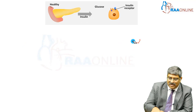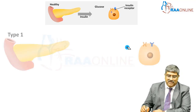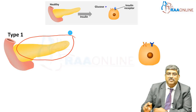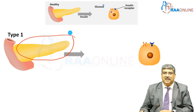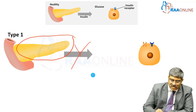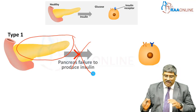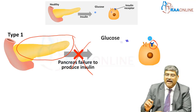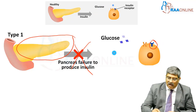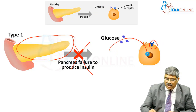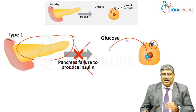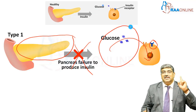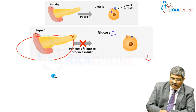Let us see what happens with type 1 diabetes mellitus. In type 1, the pancreas which was supposed to secrete the insulin does not produce the insulin. So there will not be any action on the insulin receptor and the glucose cannot be transported into the cell for utilization. Therefore, hyperglycemia occurs. This is type 1 diabetes mellitus.